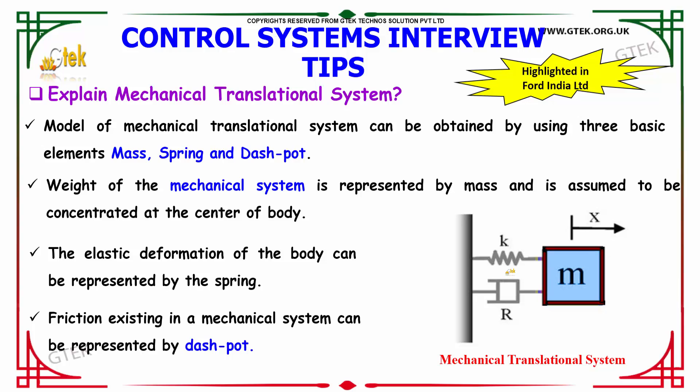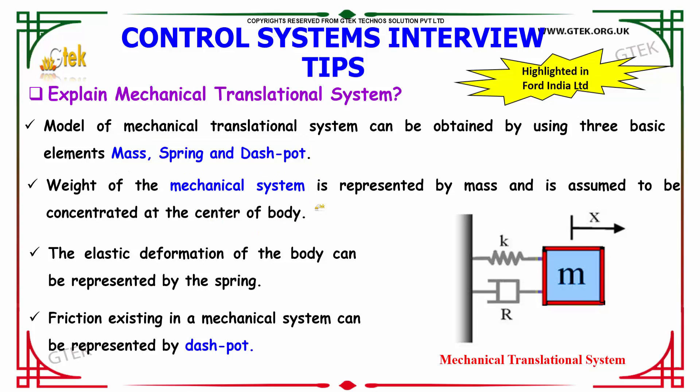Explain the mechanical translational system. The model of a mechanical translational system can be obtained by using three basic elements: mass, spring, and dashpot. The weight of the mechanical system is represented by mass, assumed to be concentrated at the center of the body. The elastic deformation of the body is represented by the spring, and friction existing in a mechanical system is represented by the dashpot.